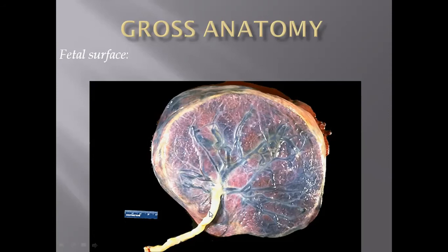After detaching the umbilical cord, when you make cross sections you need to determine how many vessels it contains. Normally it contains three vessels: two umbilical arteries and one umbilical vein, cushioned by Wharton's jelly. If you determine there are only two vessels, it could indicate fetal anomalies. You must comment whether the umbilical cord contains three vessels or two vessels.